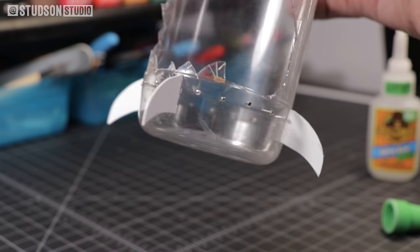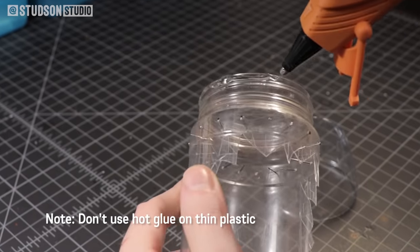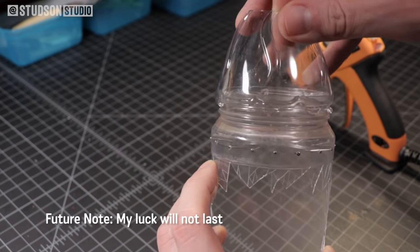Next I'm using super glue to attach the fins to the side of the rocket. If there's one thing I wish I had for this part, it would be super glue accelerant. Otherwise, get ready to hold the piece steady for two minutes while the glue sets.